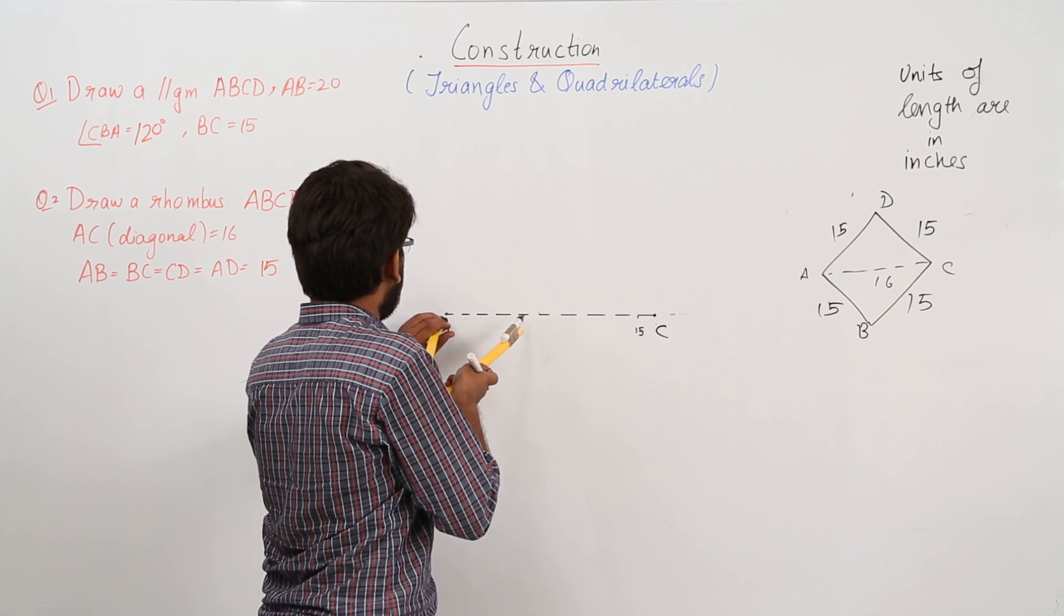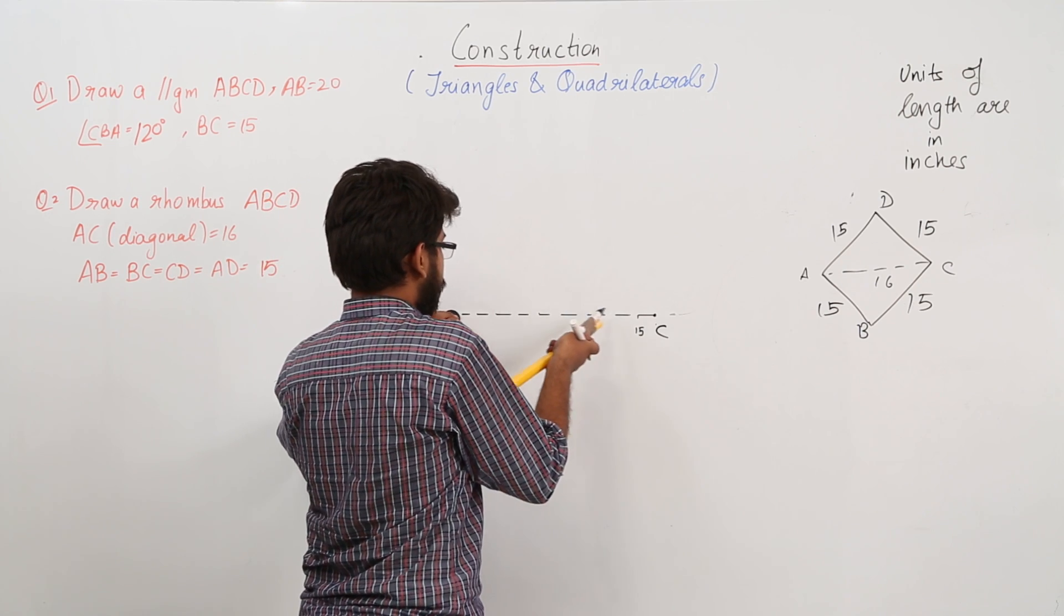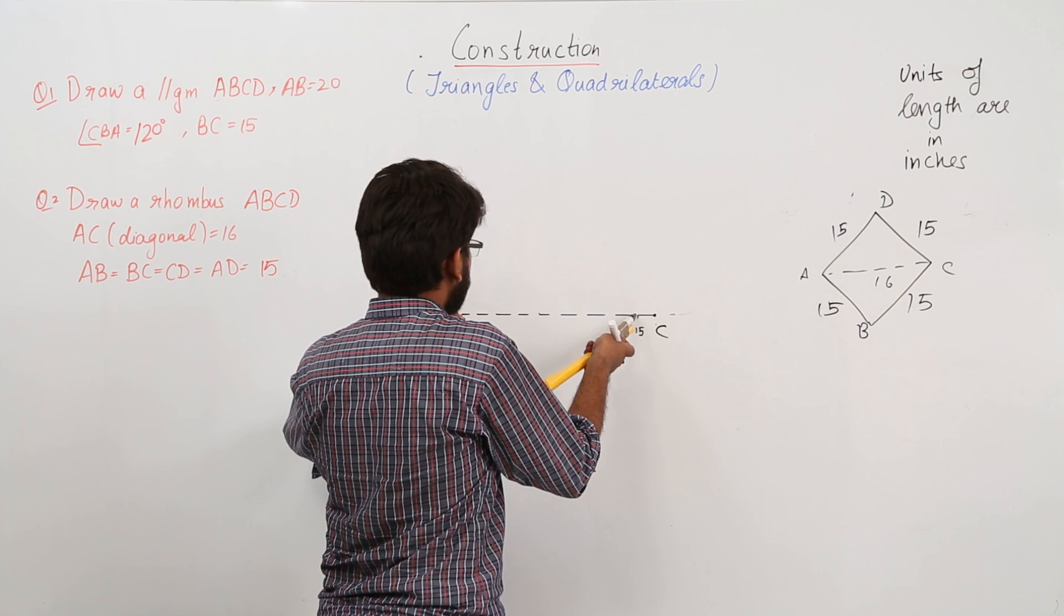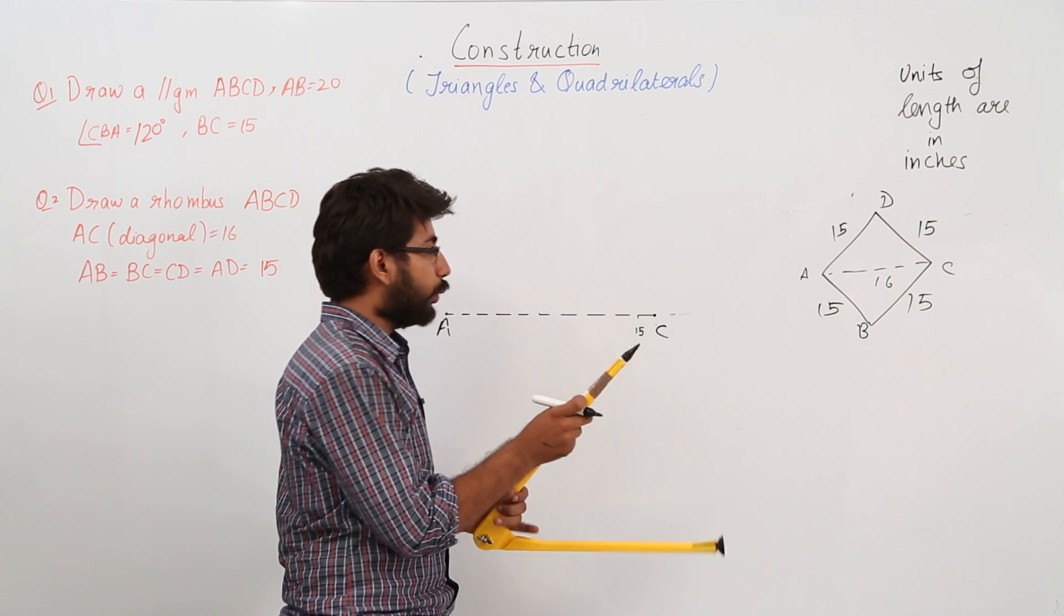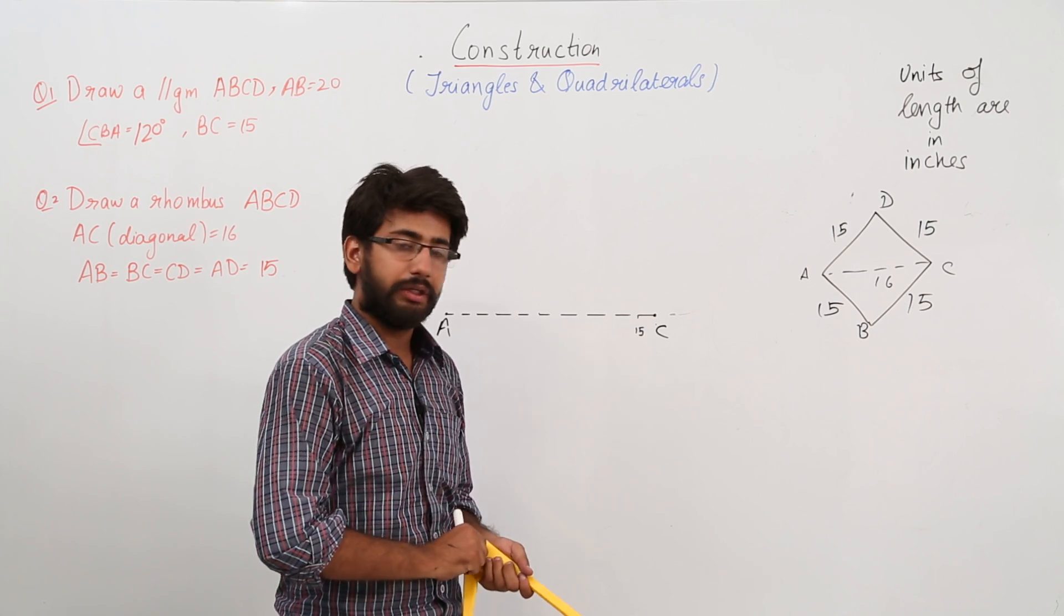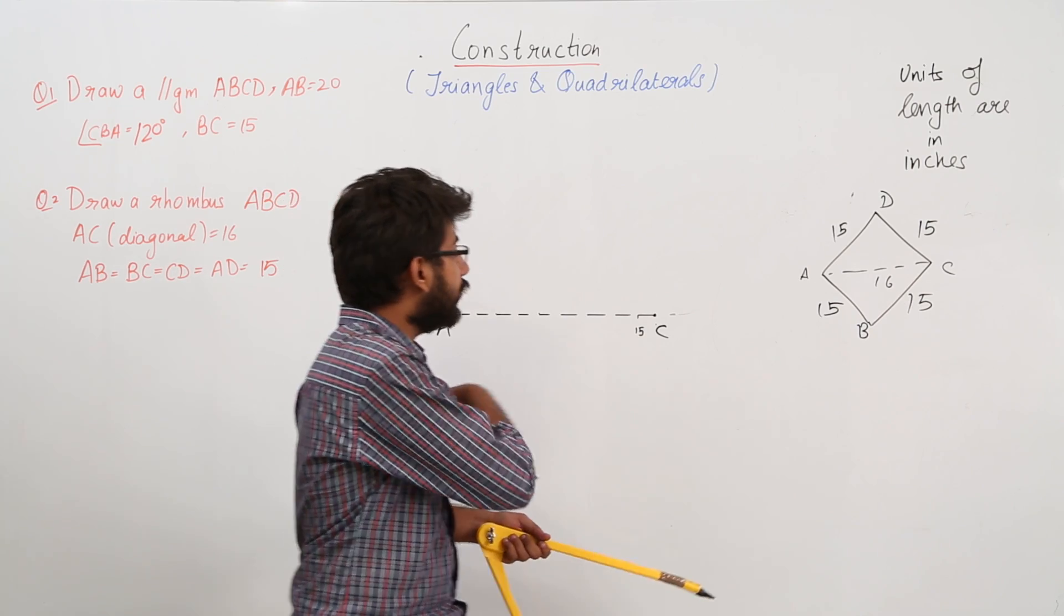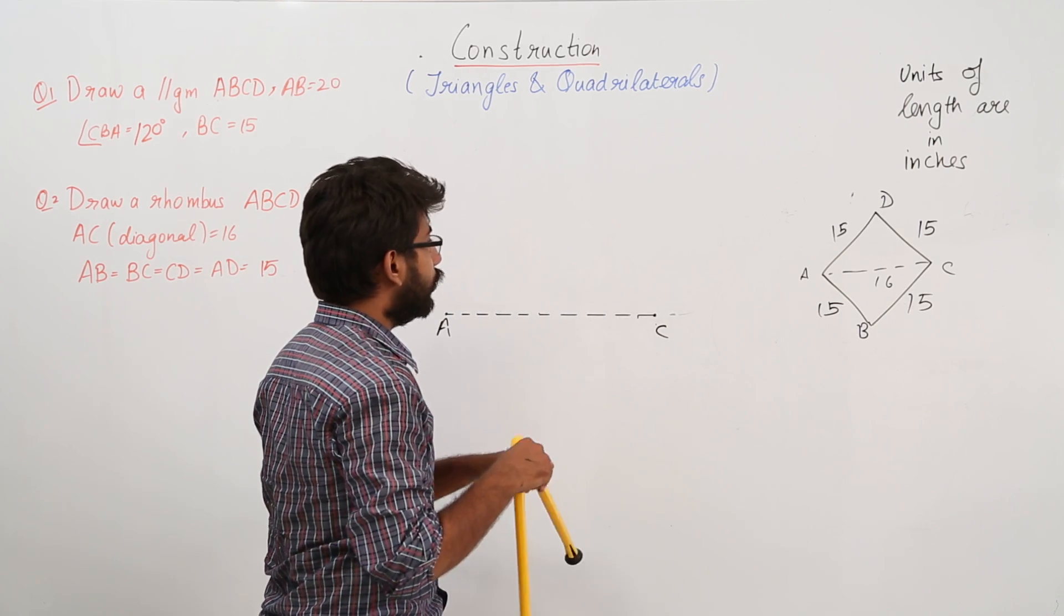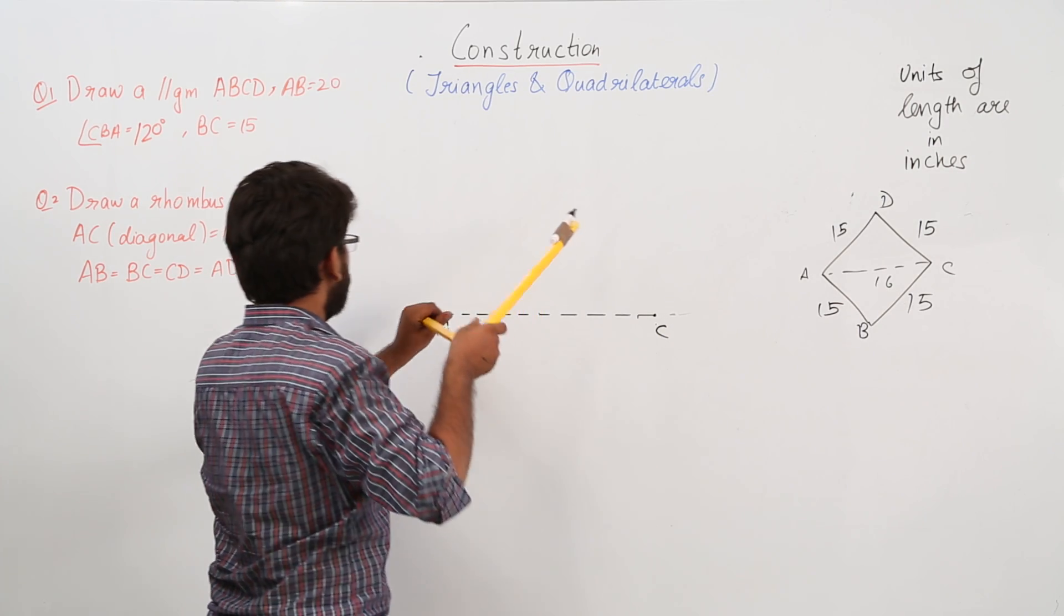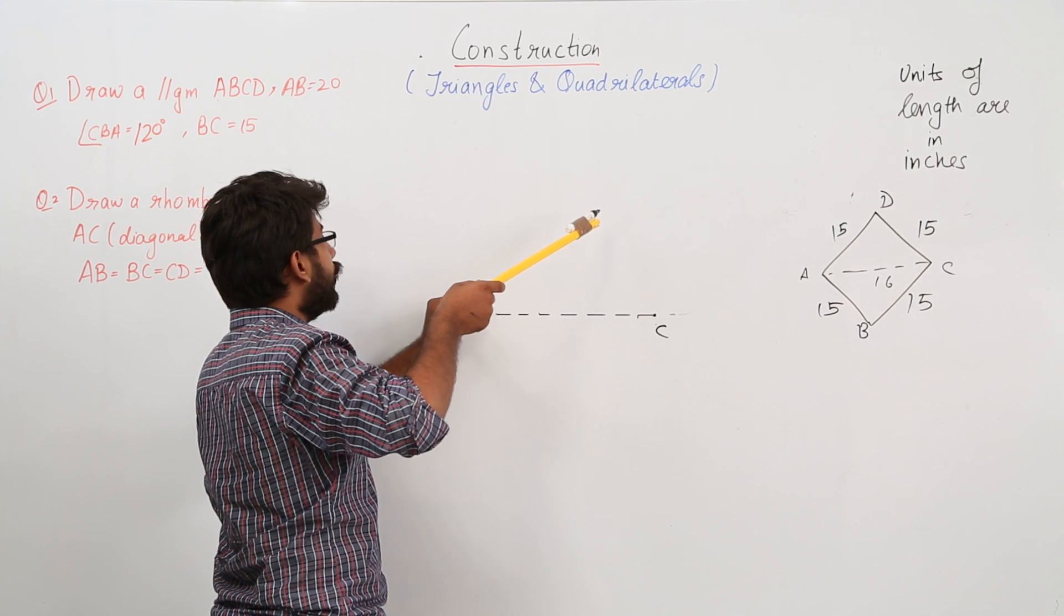Now the width of my compass or the width between these two points is equal to 15 inches. Now you can easily spot the points D and B. How? You know that AD is equal to 15, so place your pointed end of compass over here and draw an arc.